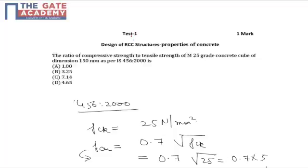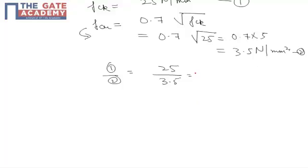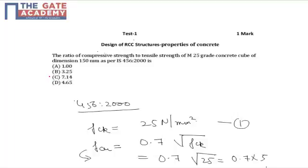Now the question asks for the ratio of compressive to tensile strength. So the ratio comes out as 25 divided by 3.5, which my calculator says is 7.14. So the correct option is option C. Thank you.